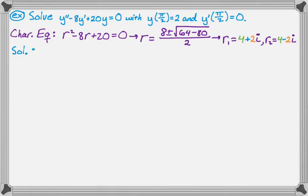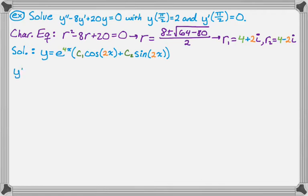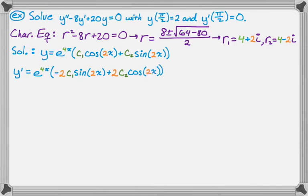So we want to write our general solution with complex roots in mind. Our general solution is going to look like e to the 4x times the quantity c₁ cosine of 2x plus c₂ sine of 2x. This is going to be more work. I need to find y prime because we know information about y at π/2 and y prime at π/2 — that's what makes this an initial value problem instead of a boundary value problem. Remembering the derivative of cosine is negative sine and the derivative of sine is cosine will be really useful here.